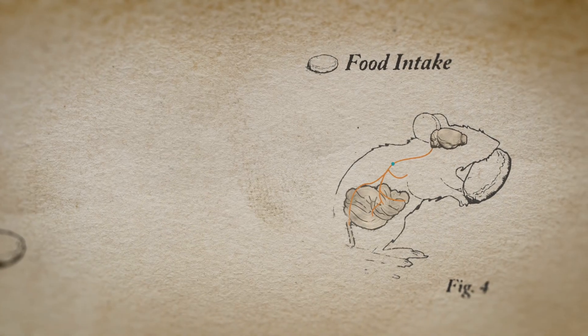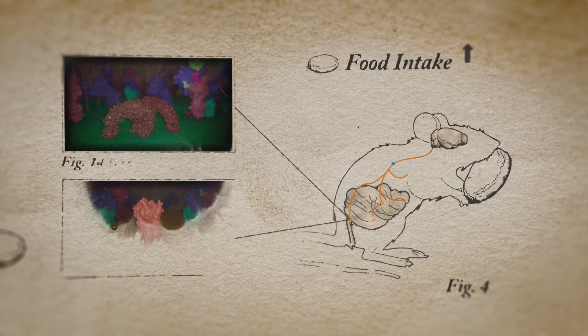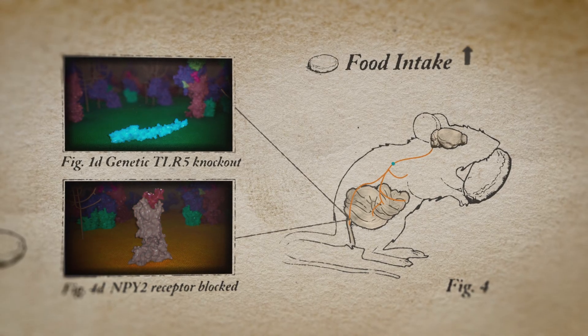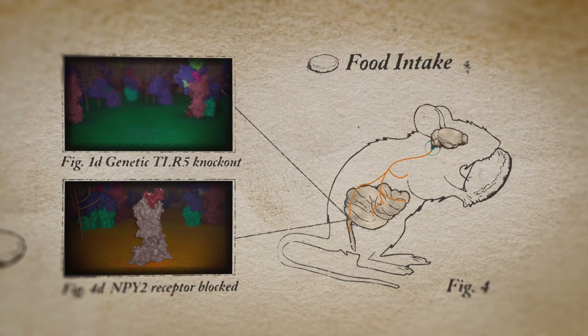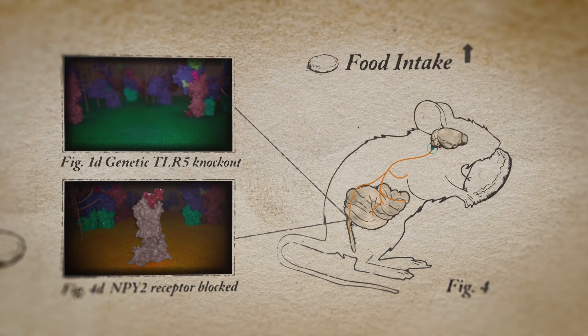When we knock out or block these receptors, we have observed that the host becomes overweight due to eating slightly more and over a prolonged period.